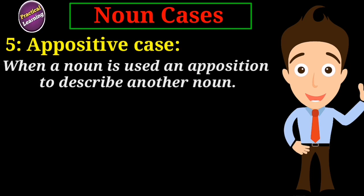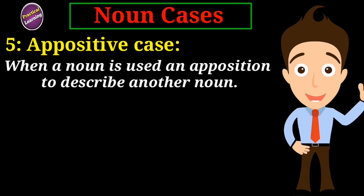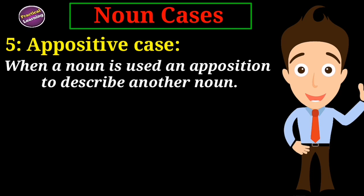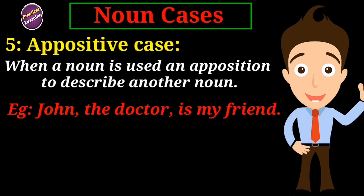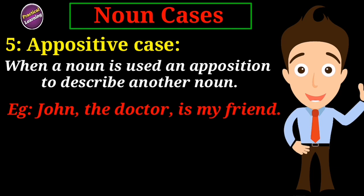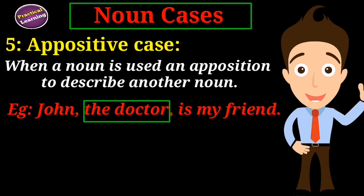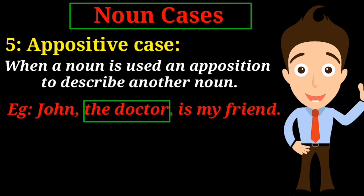Appositive case. When a noun is used in a position to describe another noun, it is called the appositive case. For example, 'John the doctor is my friend.' In this sentence there are two nouns — John and the doctor — and the noun 'the doctor' describes the noun John. So this is called the appositive case of a noun, because one noun describes another noun.